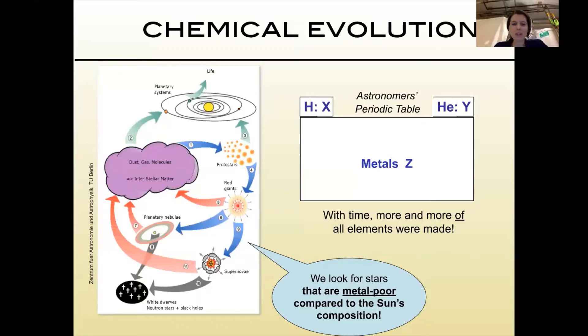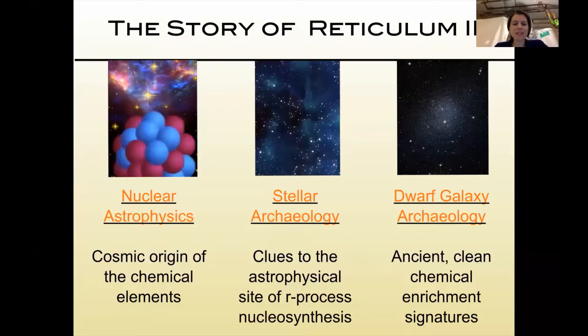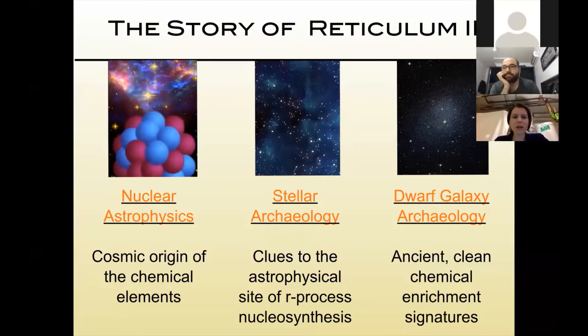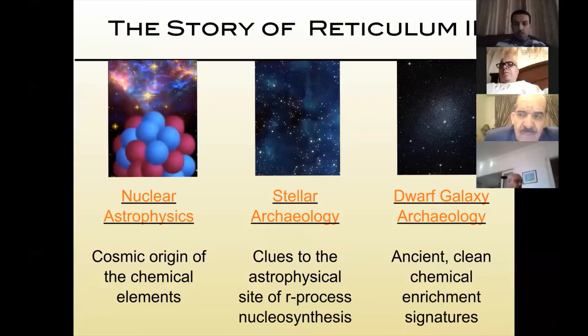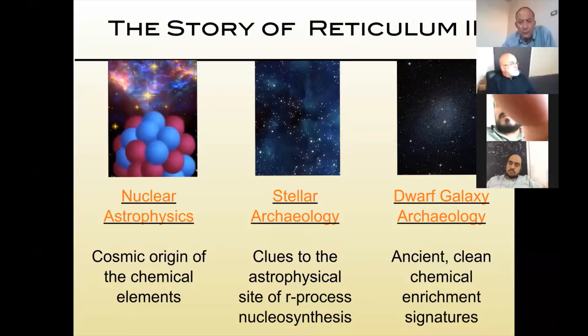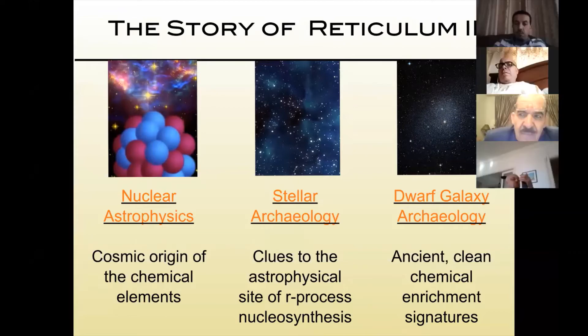Now we're on the same page about old stars. The story here of Reticulum II comes in three parts. There's a nuclear astrophysics part where we'll talk about the origin of the heavy elements, stellar archaeology for clues to the astrophysical site of the r-process, and dwarf galaxy archaeology because we can do stellar archaeology not just with stars but also with entire dwarf galaxies.